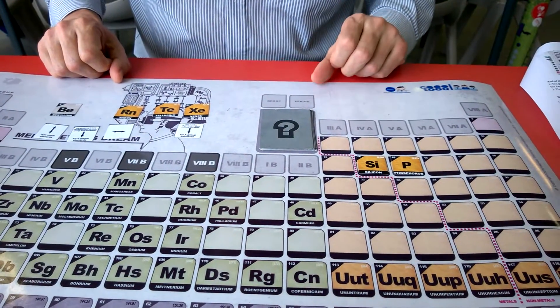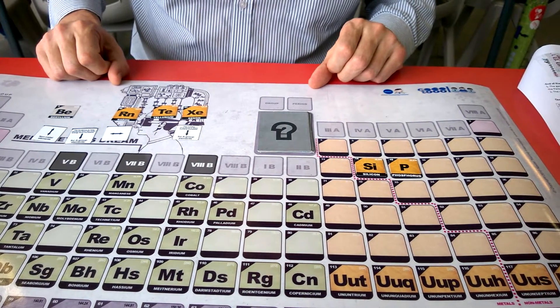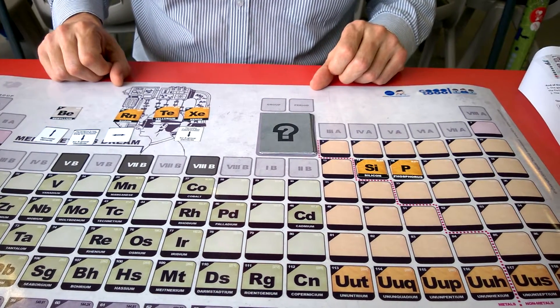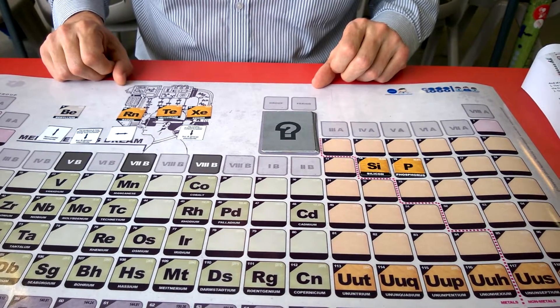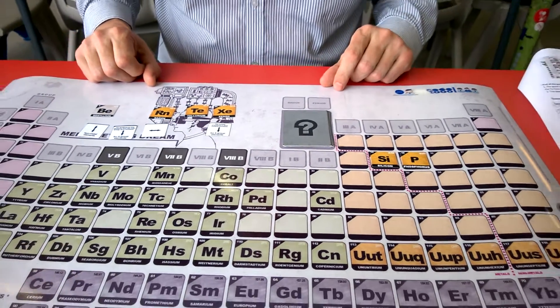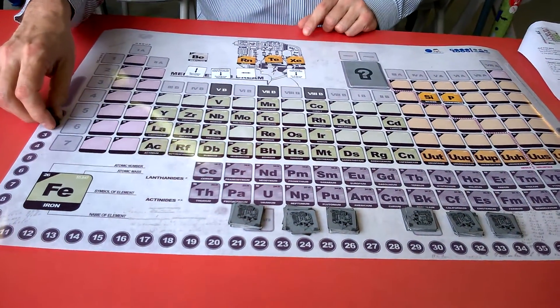Looking at silicon and Phosphorus, I'm now looking to see if I have anything else that I can fit into either the same group or the same period and I don't think I have, so that would be my turn over and I would have scored two points for placing two elements.